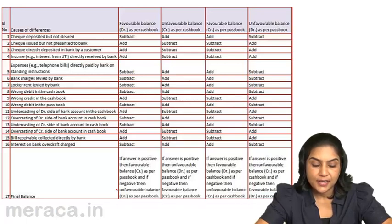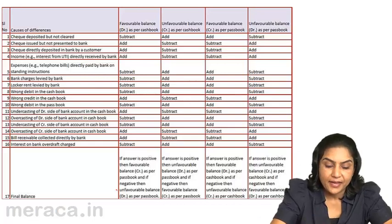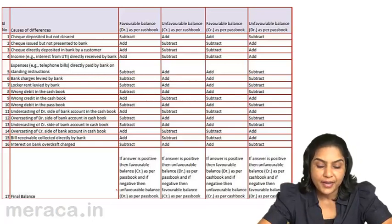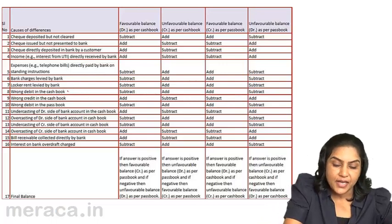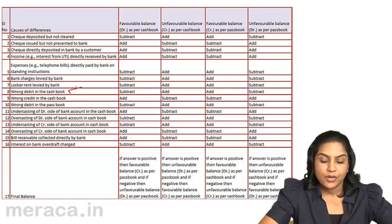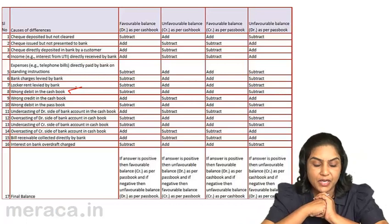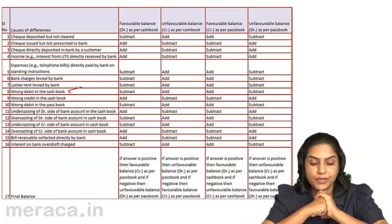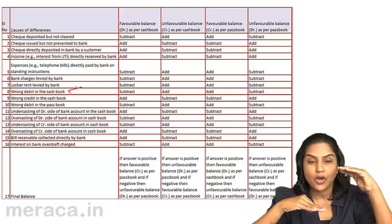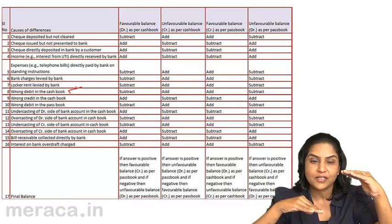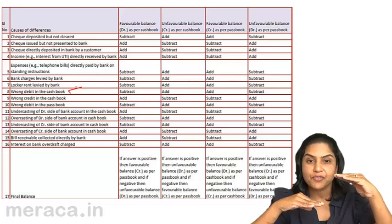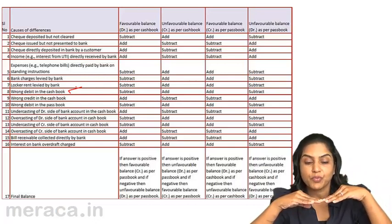Let us consider item 8, where there is a wrong debit in the cashbook. When there is a wrong debit in the cashbook, the cashbook balance has gone up — it is wrong, but the balance has gone up. If we start from the cashbook to arrive at the passbook, we would subtract.